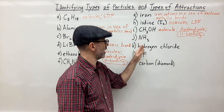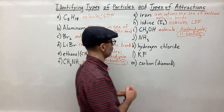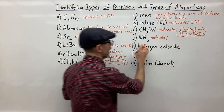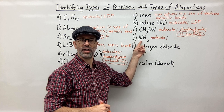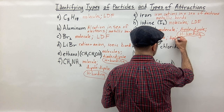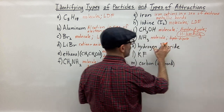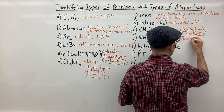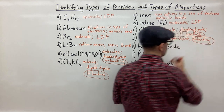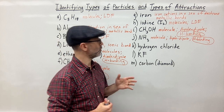For J, NH3 — ammonia. Again, we have non-metals, so this is a molecule. We have hydrogen bonded to nitrogen, which gives polar bonding, so we've got dipole-dipole. And once again, because we have hydrogen bonded to nitrogen, there's going to be hydrogen bonding. I'll circle H bonding to indicate that it is the predominant attractive force between the ammonia molecules.